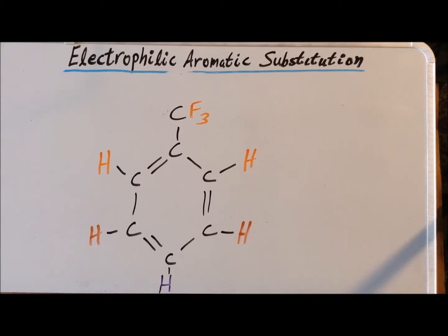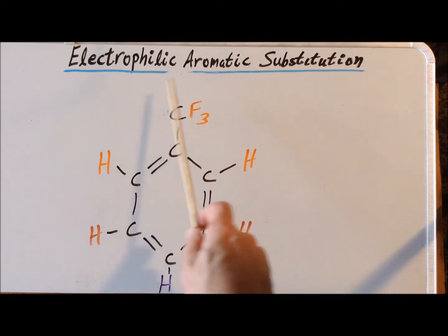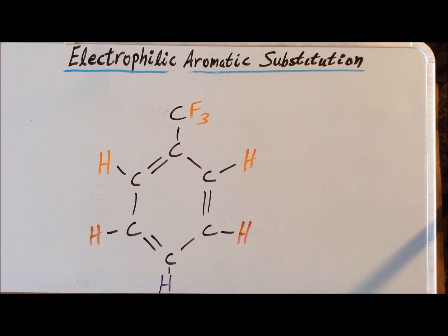The fourth and final deactivating group that we are going to look at in this video is the trifluoromethyl group. We recall that the methyl group, and in fact alkyl groups in general, are mildly activating groups that direct ortho and para. But if we replace one or more of the hydrogens with a very electronegative atom such as fluorine, this converts it from an activating group to a deactivating group and changes it from being an ortho, para director to becoming a meta director. Please see the following figures which show the results of electronic structure calculations on the parent compound and the various intermediates in the electrophilic aromatic substitution of a methyl group for hydrogen at the ortho, meta, and para positions.